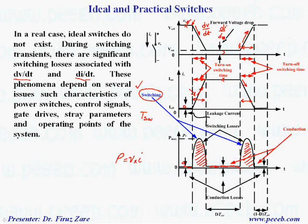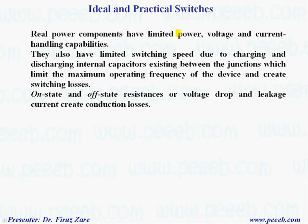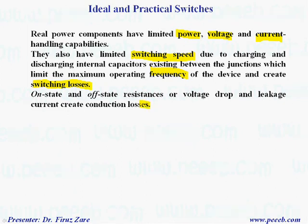These are main issues in power electronics because they create significant overcurrent and overvoltage, and create significant EMI issues. Real power components have limited power, voltage, and current handling capabilities. They also have limited switching speed because of charging and discharging internal capacitors between junctions, which limits the maximum operating frequency and creates switching losses. On-state resistance, or voltage drop and leakage current, create conduction losses. We must calculate the total loss associated with switching and conduction losses.